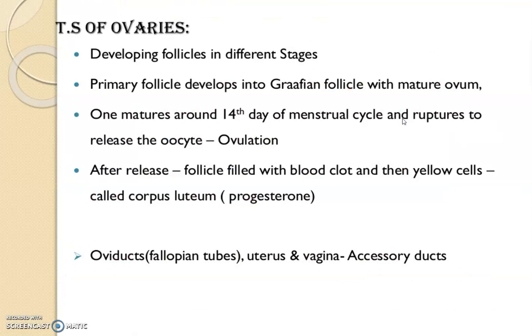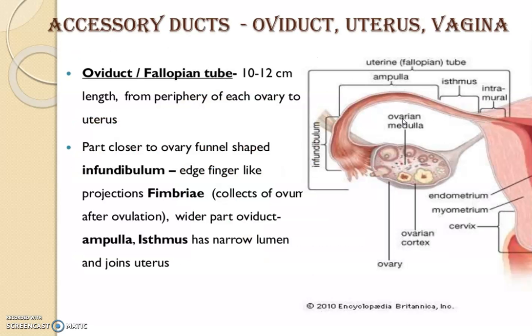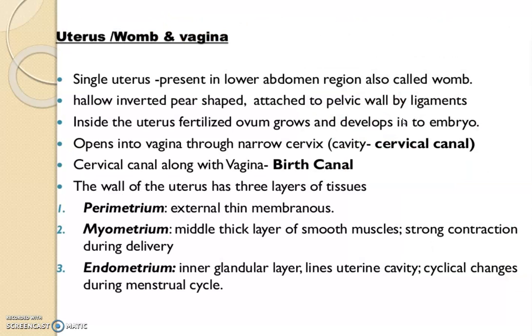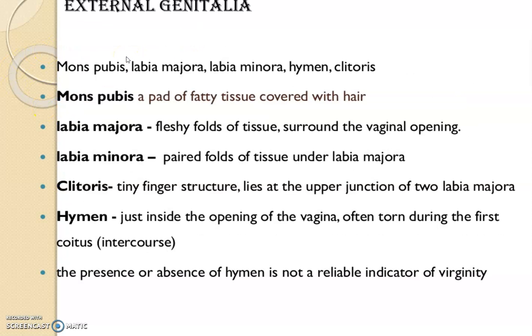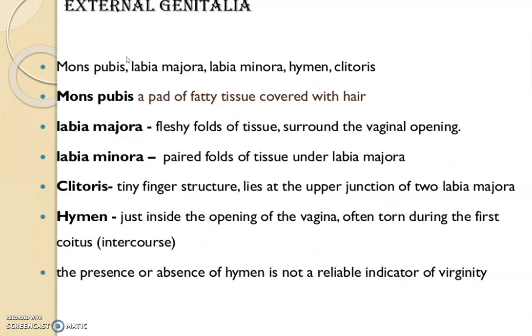This is the structure of the ovary and the female reproductive system. The fallopian tube is also known as the oviduct. The uterus and womb refer to the same structure. The vagina is the female copulatory organ. This concludes the overview of the human reproductive system. Thank you, students — bye bye, take care.